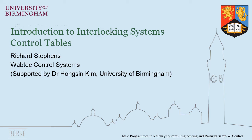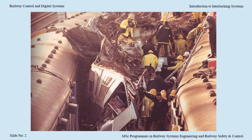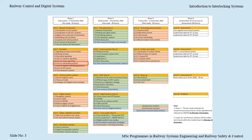Introduction to Interlocking Systems: Control Tables. Or more about how to stop trains from colliding with stuff. This lecture is part of the pre-study for Railway Control and Digital Systems.